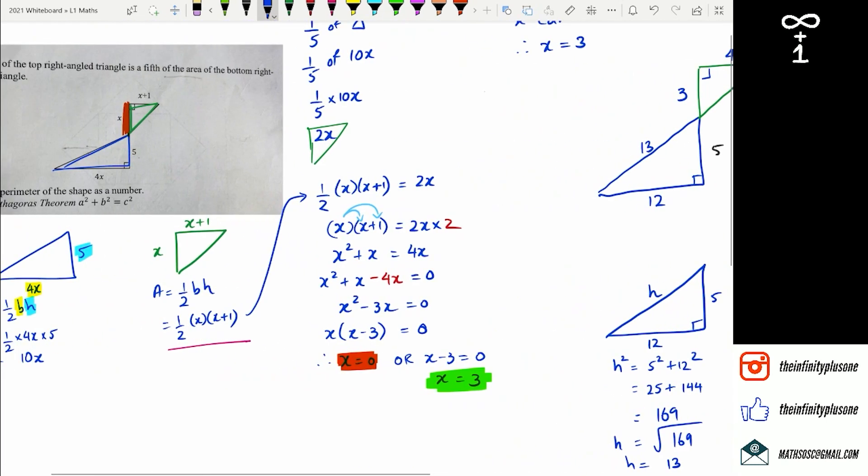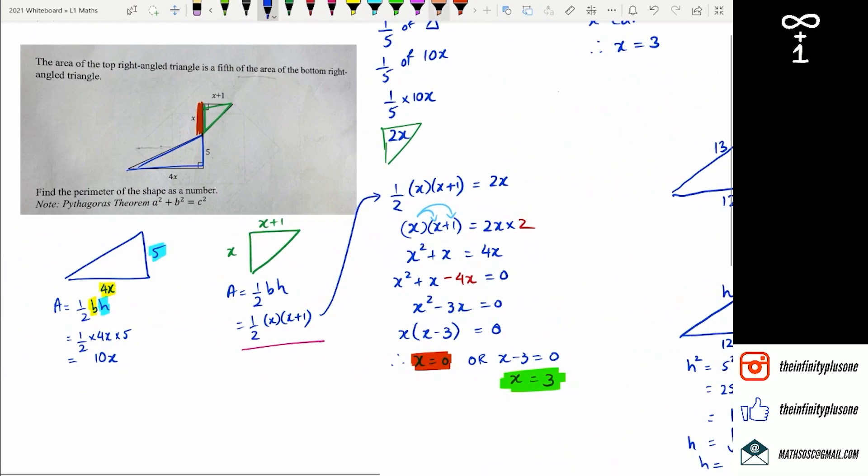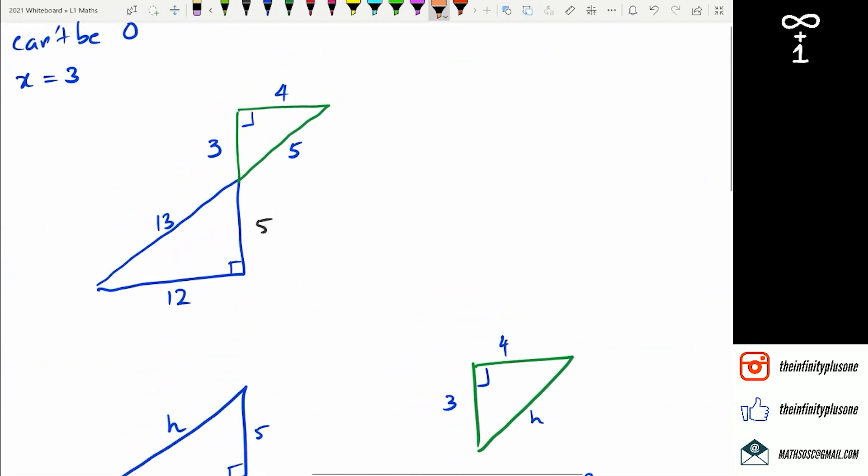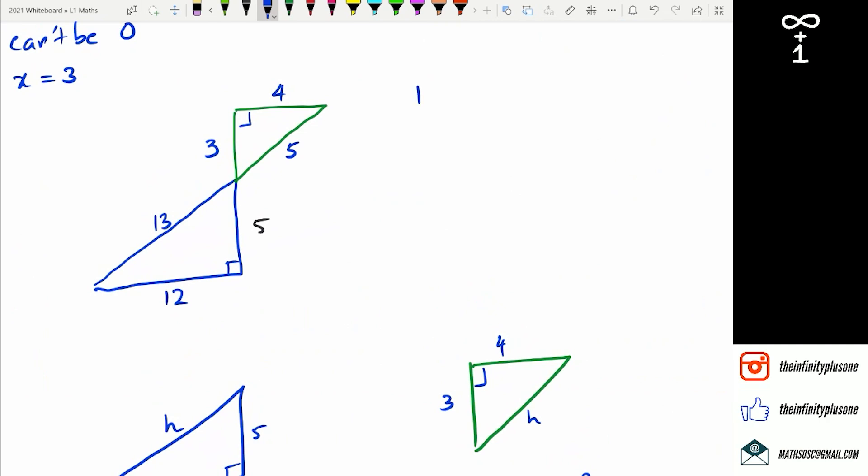And if you look at the question itself, it's asking you for the perimeter of the shape as a number. So we've got the perimeter here. It's just a matter of adding it all up. If we write this down as perimeter, equals 3 plus 4 plus 5 plus 5 plus 12 plus 13. And whatever that is. So what have we got? 7, 10, 17, 17, 30, 42.